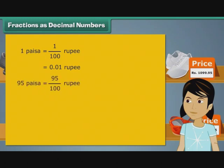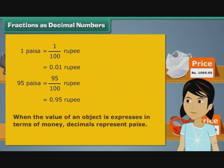Therefore, 95 paise form 95 by 100th of a rupee. We can express 95 paise as 0.95 rupee. Therefore, the decimals in the footwear prices stood for paise. When the value of an object is expressed in terms of money, the decimal represents paise.